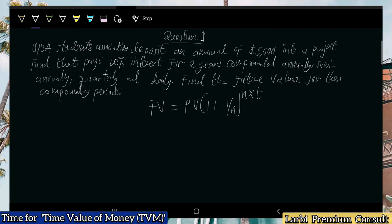That is the basic, most fundamental formula for time value of money — though in other areas the formula changes slightly. In this question, our present value or principal sum is five thousand dollars, and the time horizon for the investment is two years, with an interest rate of ten percent.